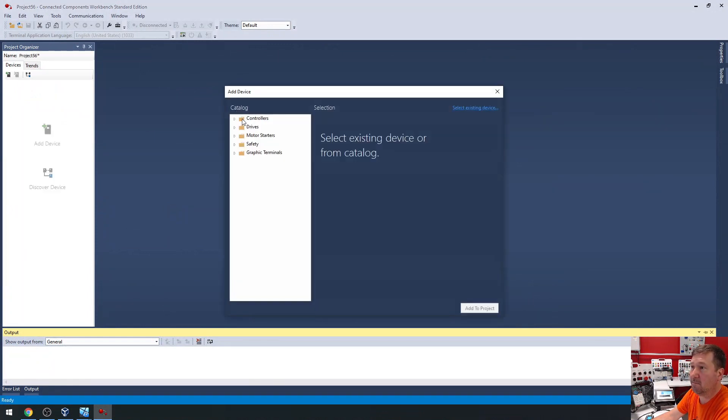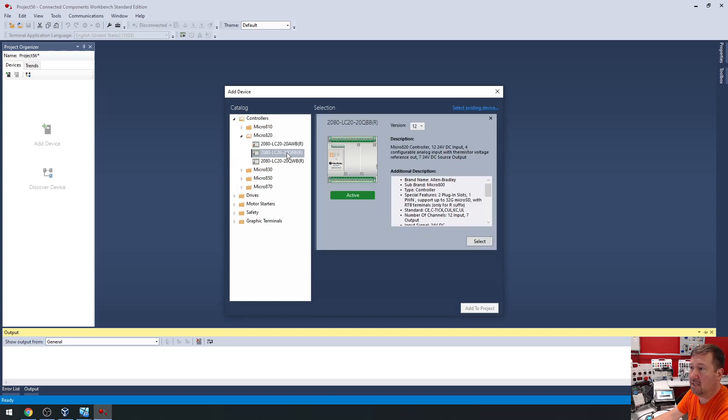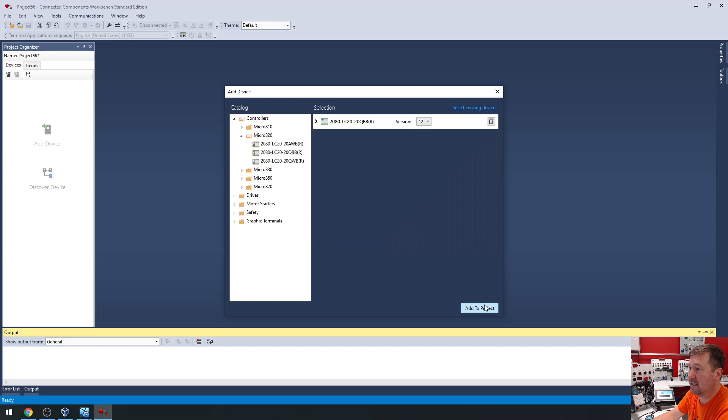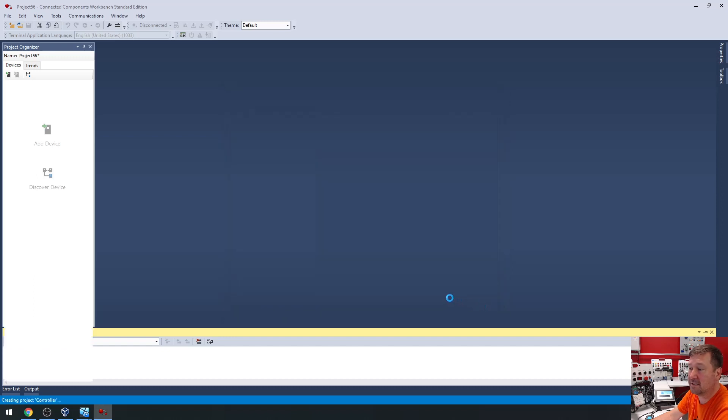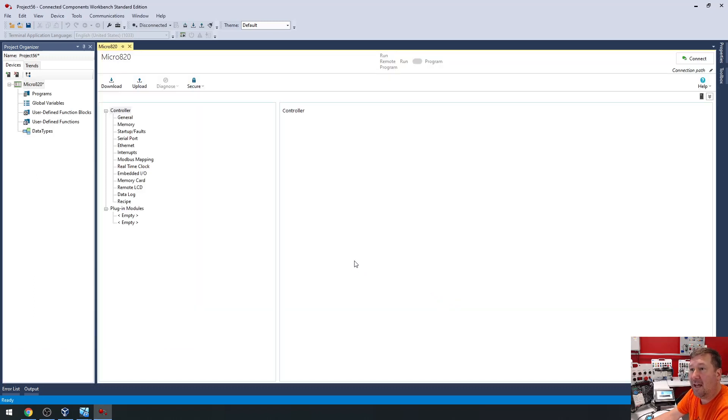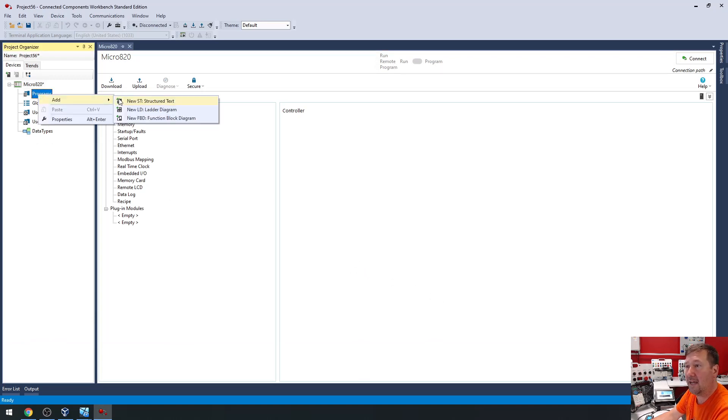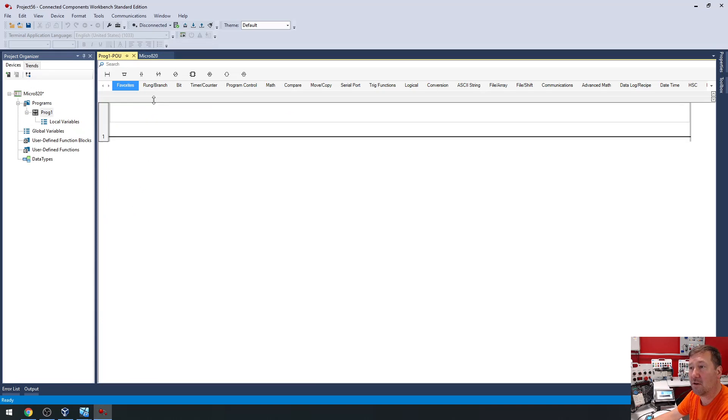And then we'll go to our controllers, we're going to find our Micro 820, we're using a QBB. Select and add to project, and then usually we're mostly interested in writing a program, so I'm going to right-click, add new ladder diagram, and usually we will be off to the races now writing our program.